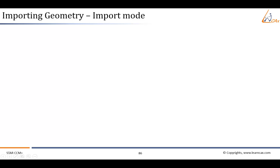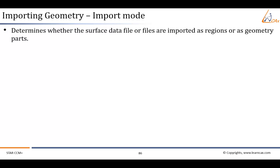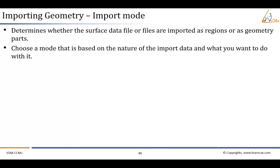When we import an external CAD file into Star CCM+, there are certain methods to import them. These methods are known as import mode. The import mode option determines whether the surface data file or files are imported as regions or as geometry parts. If you only have a few bodies and do not want to maintain hierarchical assembly of parts, then importing the data as regions is probably more efficient. However, if you have dozens of bodies and want to organize them in their assemblies for future reference, then using the parts option would be better.